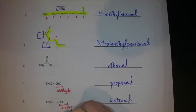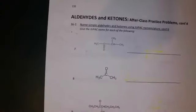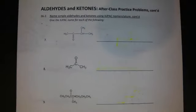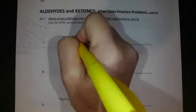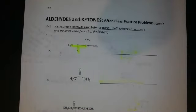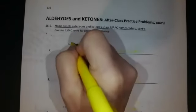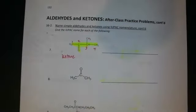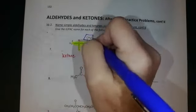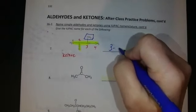Now let's do naming ketones — on page 132. Here is the ketone functional group: a carbon double-bonded to oxygen with a carbon on either side. Highlight the longest continuous chain that includes the ketone, number from the end closest to that functional group, and identify any additional groups. There's a methyl on carbon three, so this ketone is named 3-methyl-2-butanone.